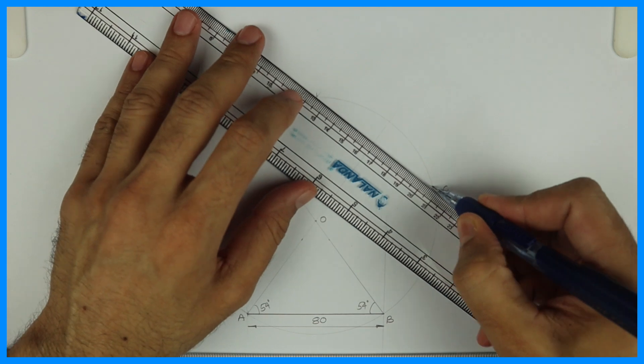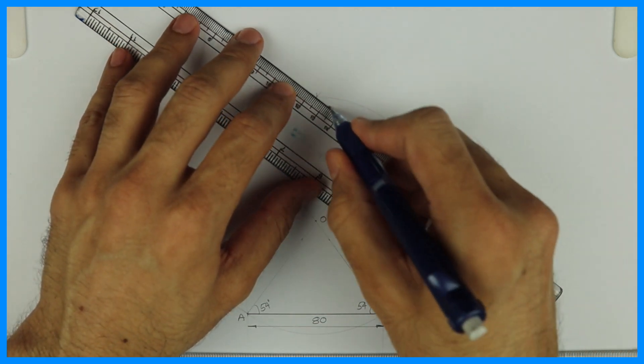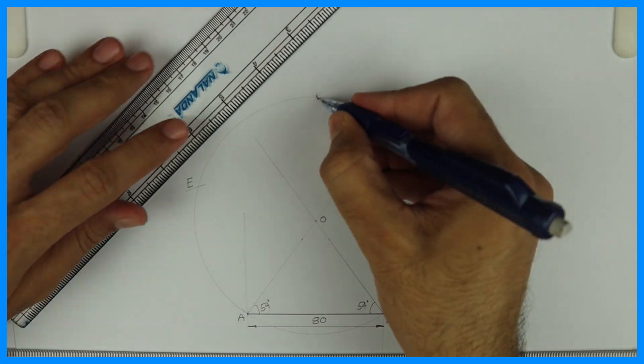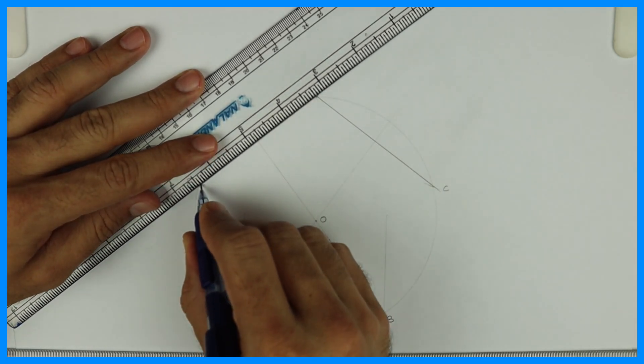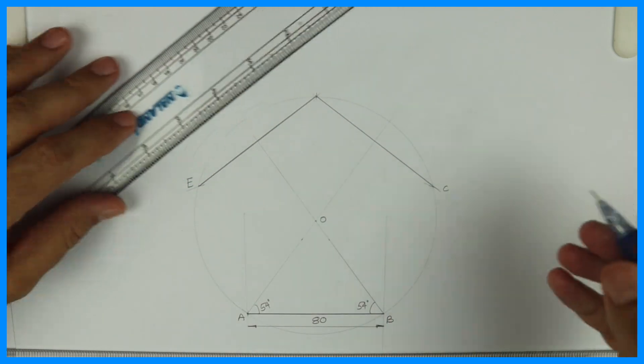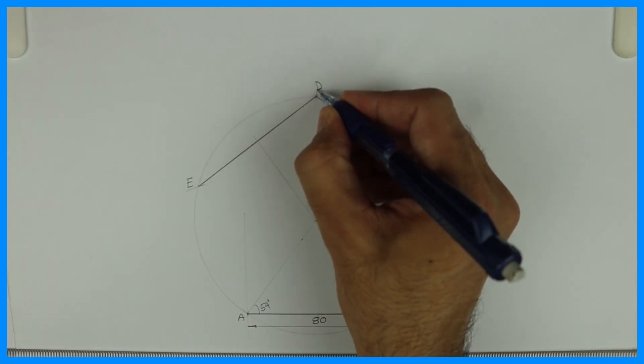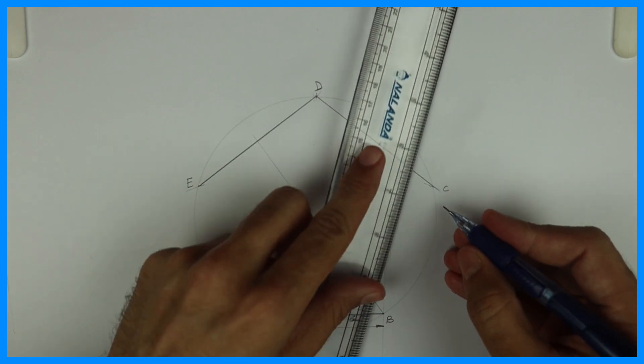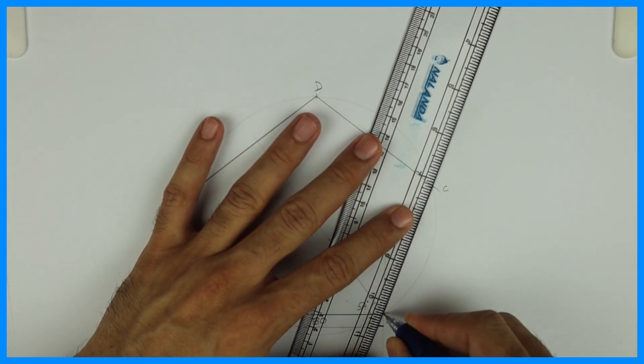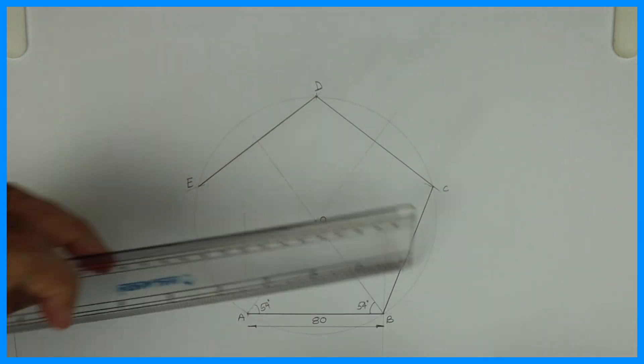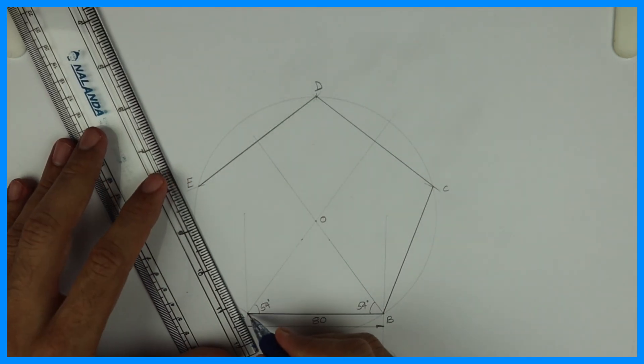Then you can join C D, and A E. So you will get a pentagon.